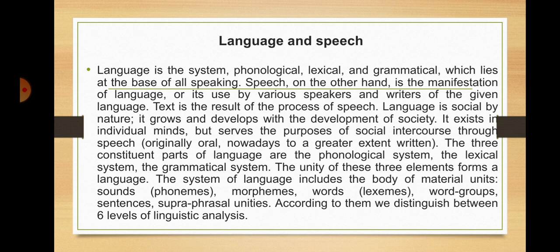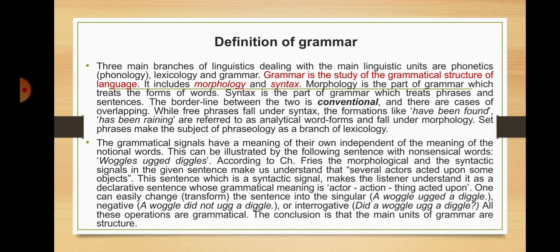The three constituent parts of language are the phonological system, the lexical system, and the grammatical system. The unity of these three elements forms a language. The system of language includes the body of material units: sounds, phonemes, morphemes, words, lexemes, word groups, sentences, and super-phrasal unities. According to these, we distinguish between six levels of linguistic analysis. Three main branches of linguistics dealing with the main linguistic units are phonetics/phonology, lexicology, and grammar.